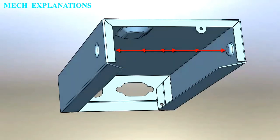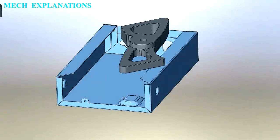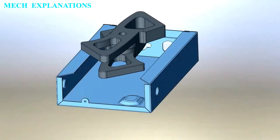A jig is a type of custom-made tool used to control the location and/or motion of parts or other tools. A jig's primary purpose is to provide repeatability, accuracy, and interchangeability in the manufacturing of products.